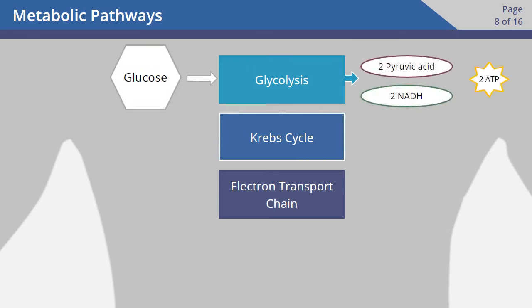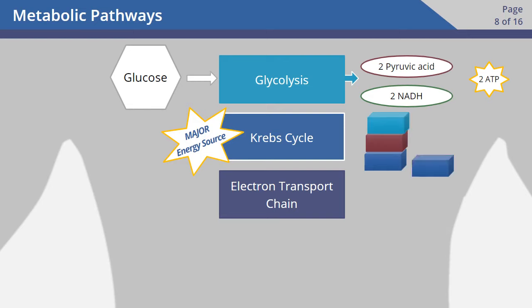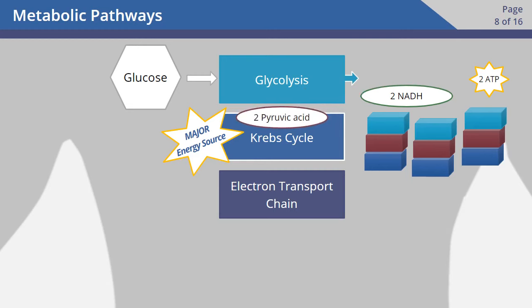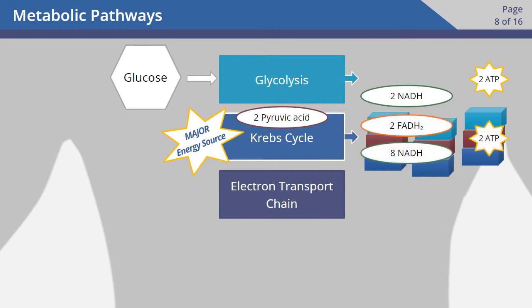Next is the Krebs cycle. Simply put, this is the major source of energy in all living organisms. What's produced in the Krebs cycle are building blocks for other important body processes. Let's drag the pyruvic acid to the metabolic pathway in the Krebs cycle, where it will be processed.